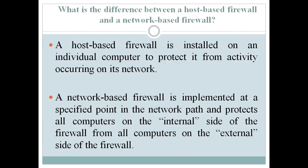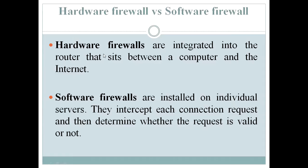Hardware firewalls are integrated into the router — the hardware itself that sits between the computer and the internet. Software firewalls are installed on individual servers, not on the routers. They intercept each connection request and determine whether the request is valid or not.